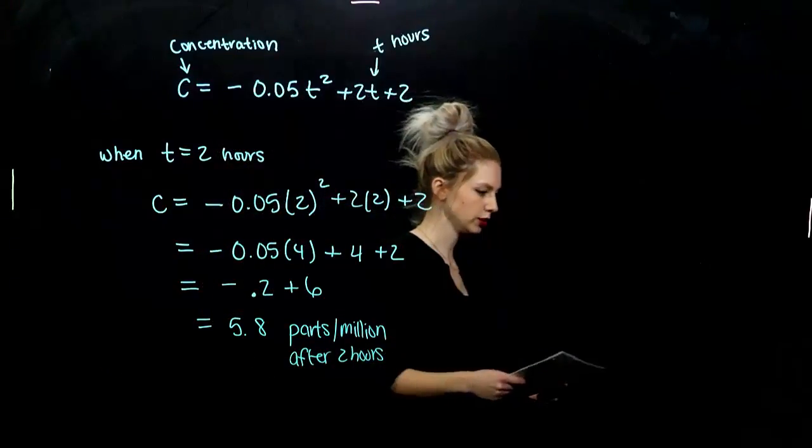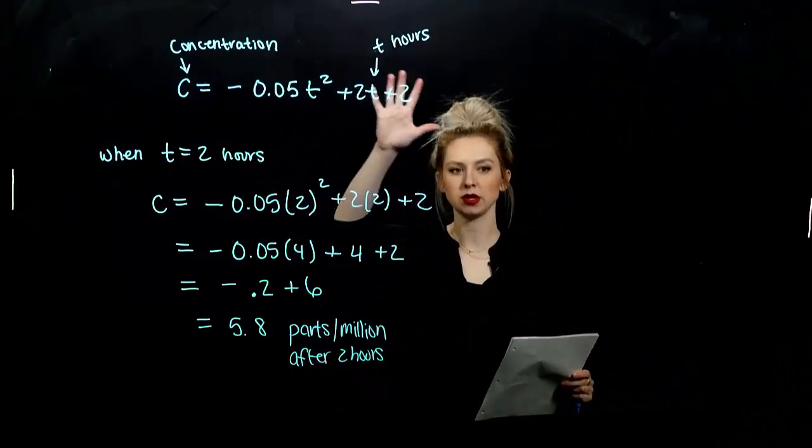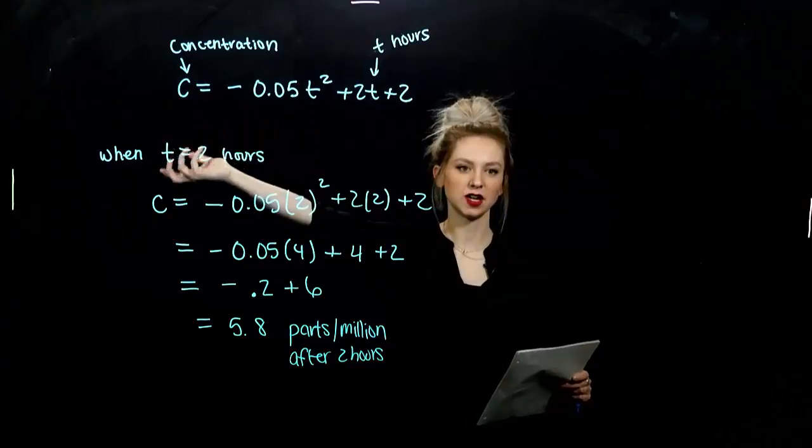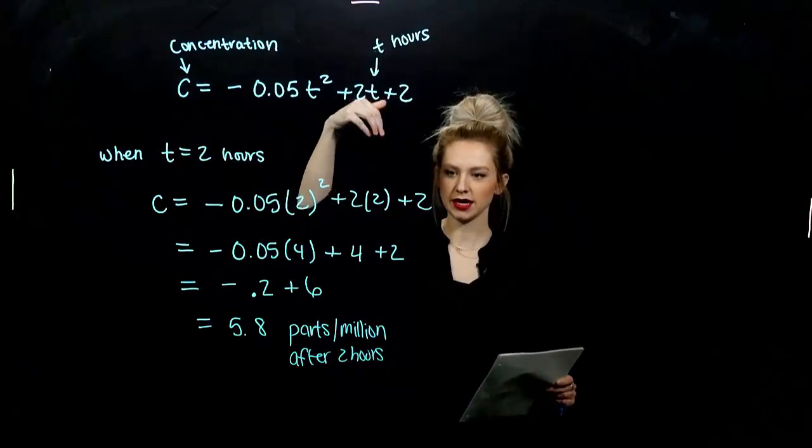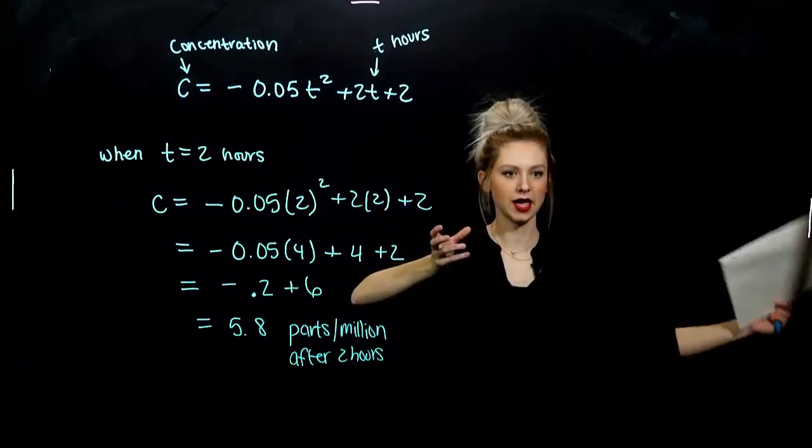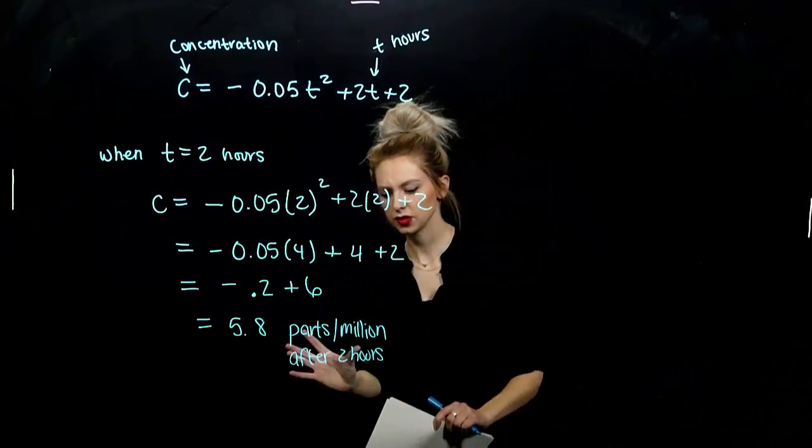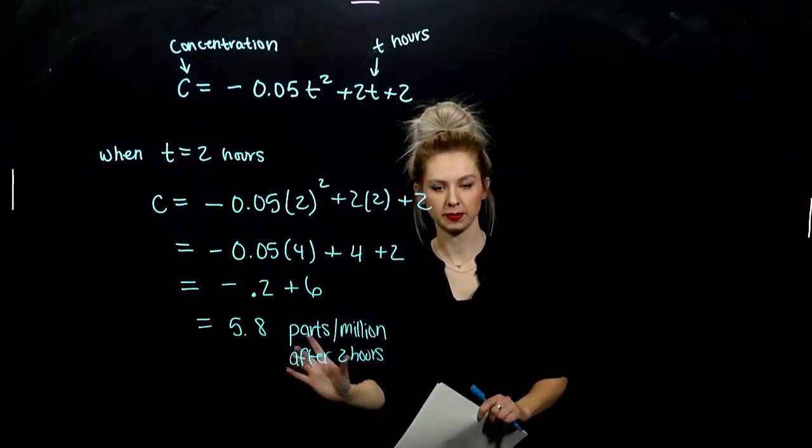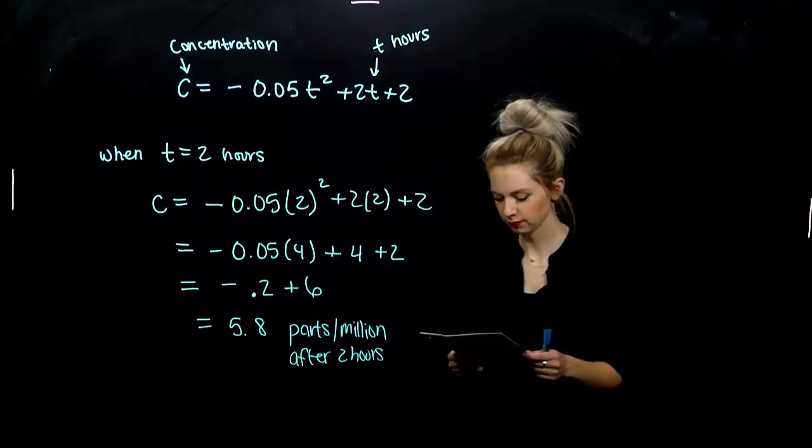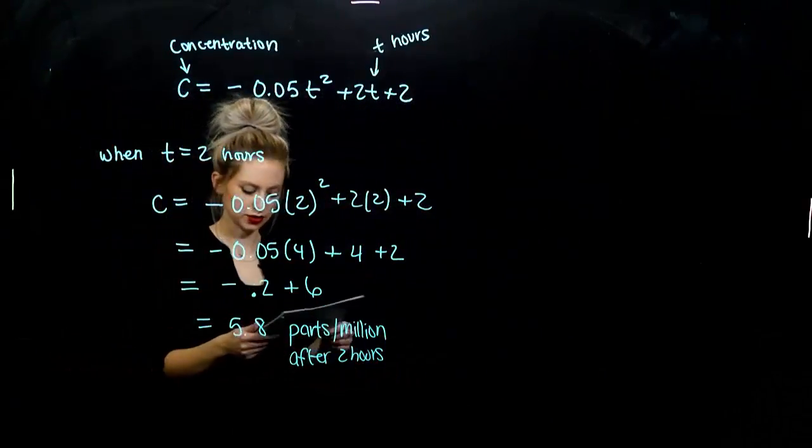So it's important to say at what time this is happening because the polynomial is dynamic. Whatever I plug in for T, C is going to be based on that. Your concentration when you first take antibiotics is going to be different than at the end of the day after it's been in your system. So specifying when it's happening is important for these kinds of questions. So that concentration was 5.8 parts per million after two hours.